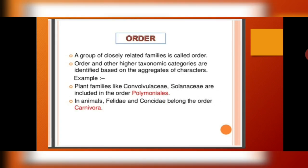When similar or closely related families come together, they form an order. Order and other higher taxonomic categories are identified on the basis of aggregates of characters. Plant families like Convolvulaceae and Solanaceae are together in one order called Polemoniales. In animals, Felidae and Canidae belong to the order Carnivora.